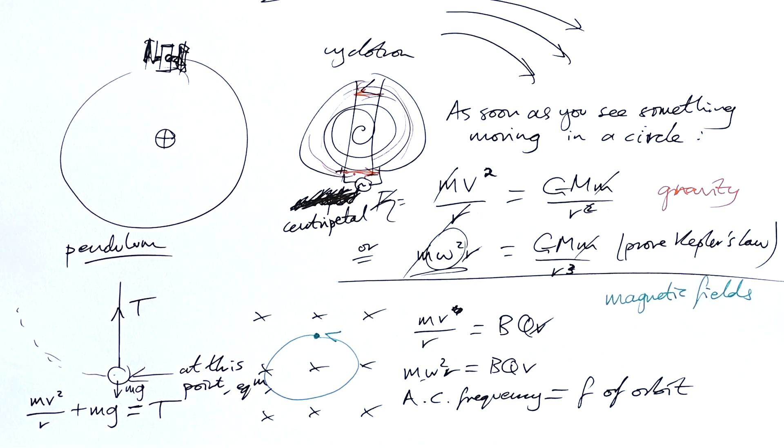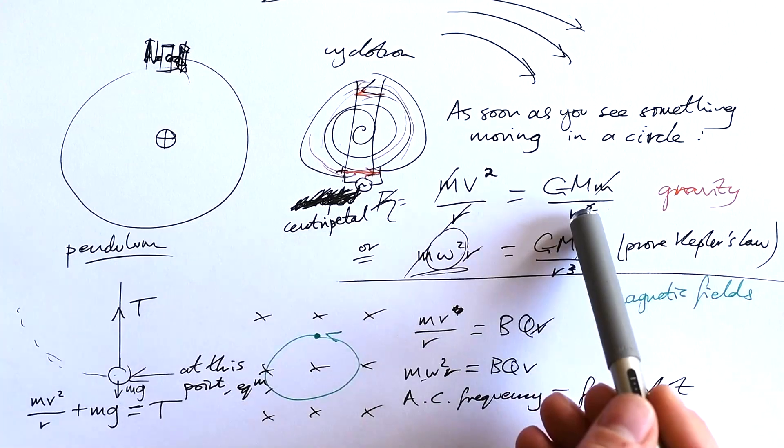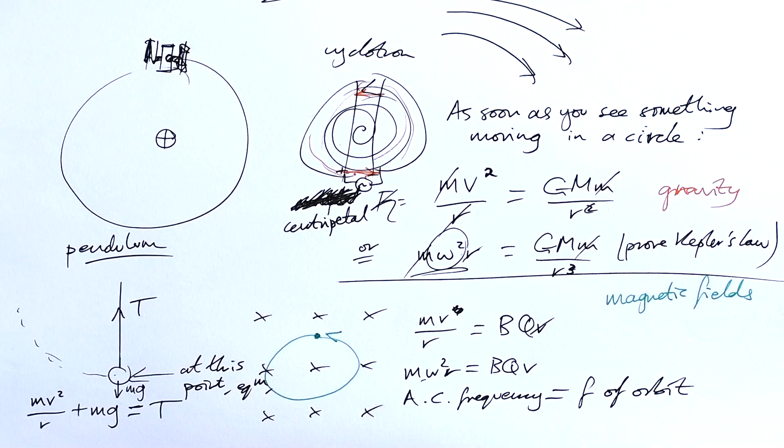A quick little trick. As soon as you see something moving in a circle, undergoing circular motion, chances are you're going to have to equate mv squared over r or m omega squared r to one of these forces. It is possible for this to be also equal to kqq over r squared, if we are talking about electric fields as well. But I haven't really seen a question prop up about that.